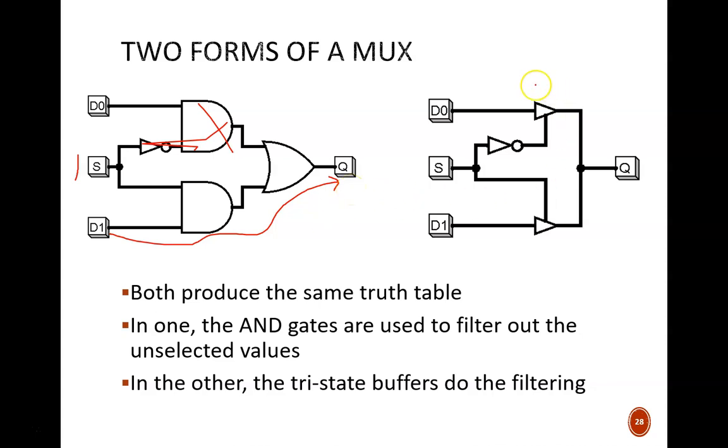The circuit on the right accomplishes the same thing, but instead of AND gates, it uses tri-state buffers. Let S equal 1. This enables the D1 signal to pass through its buffer. At the same time, that 1 is complemented here to a 0, which cuts off the D0 signal. As a result, the only signal reaching output Q is from D1.